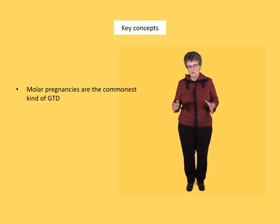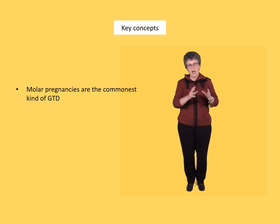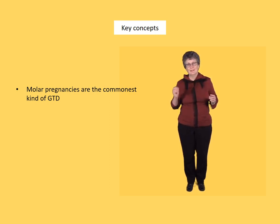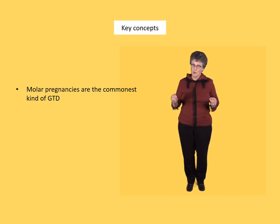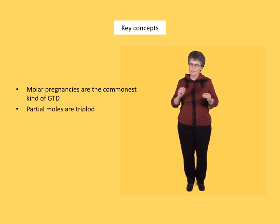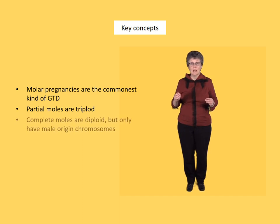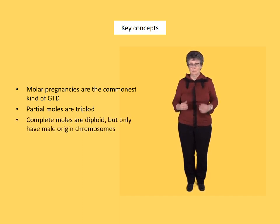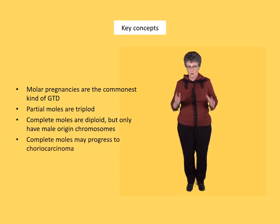Gestational trophoblastic disease is commonly divided into partial and complete moles, and they differ in their chromosome number. Partial moles are triploid and complete moles are diploid but only have male-origin chromosomes. Complete moles may progress to choriocarcinoma.